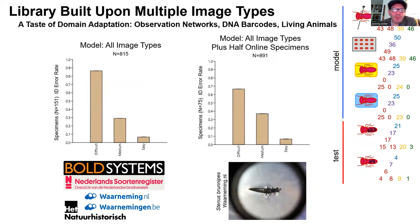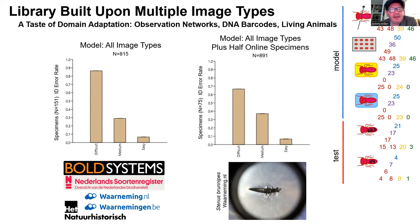We downloaded images of our seven species from popular Dutch and Belgian observation sites, as well as the BOLD DNA barcode database, and supplemented this with images from the Natural History Museum in Rotterdam. This collection of test images is quite variable in character and quality. The results, especially for the difficult category, are not very encouraging. However, when we split the library in half and use part for training, the accuracy for the difficult species does improve somewhat. But clearly, dealing with this freewheeling collection of images scattered online is going to be a challenge.